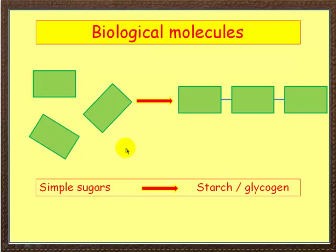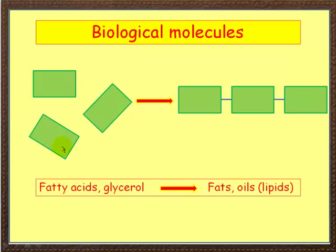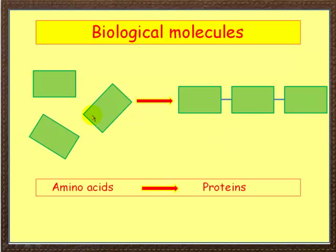Now molecules are made up of simple units. So sugars, for example glucose, are combined together to form bigger carbohydrates, for example starch and glycogen. Fatty acids and glycerol combine to form fats and oils. Amino acids build up proteins.